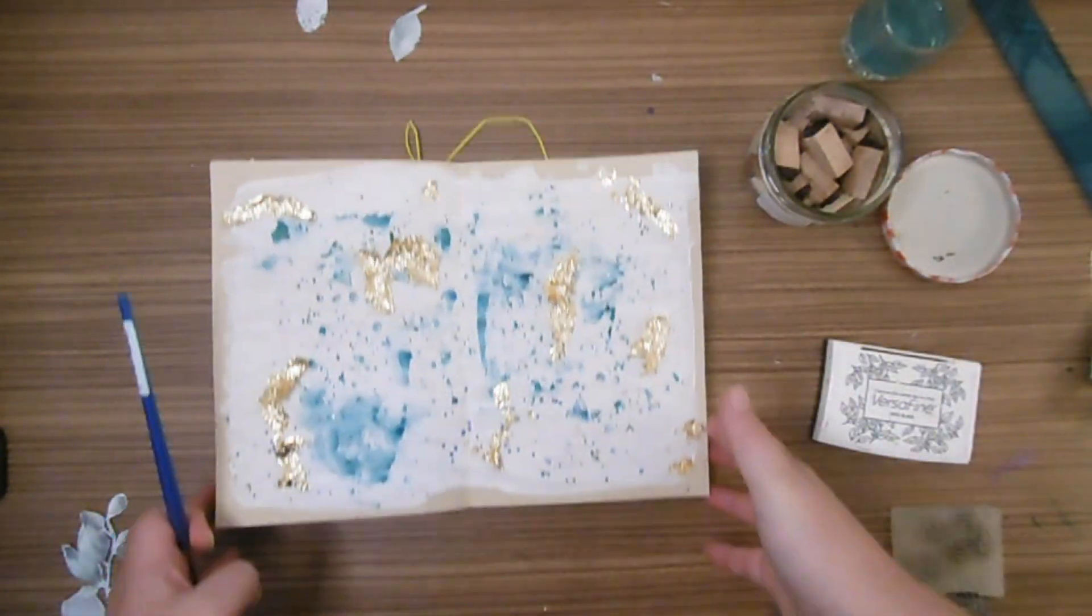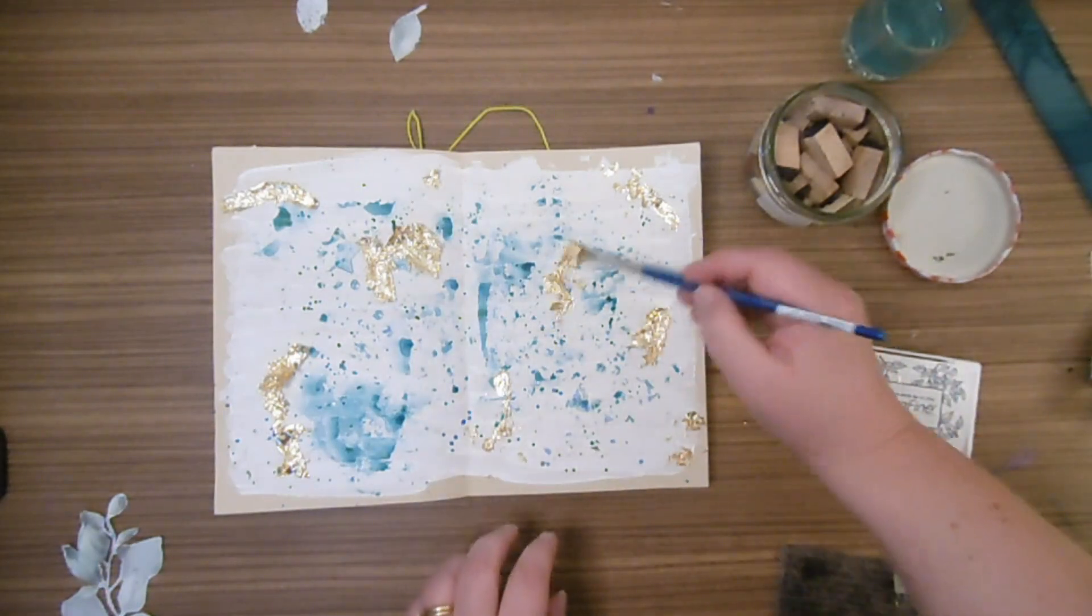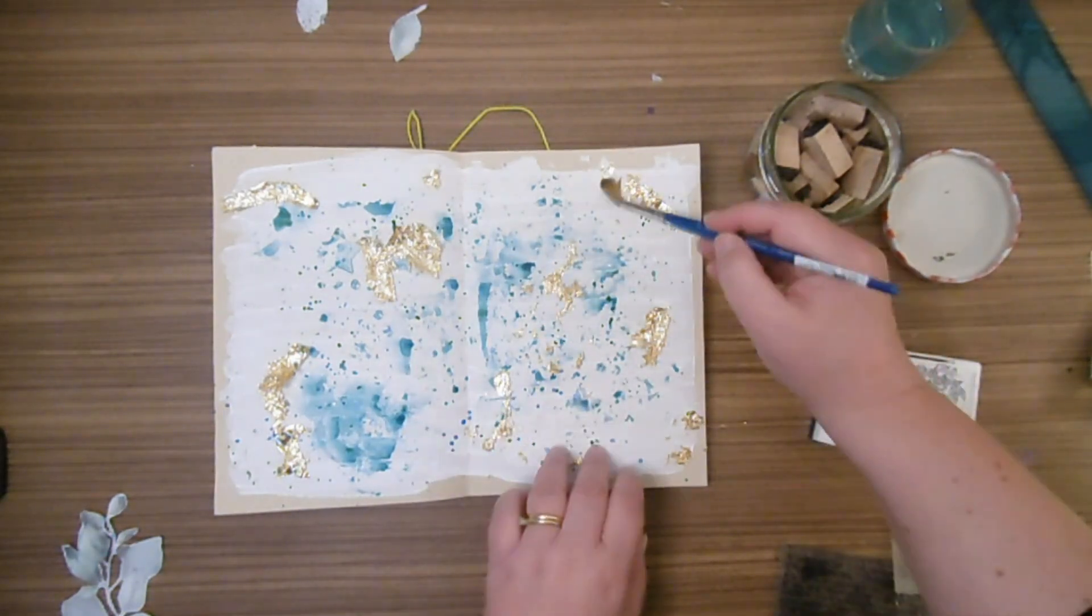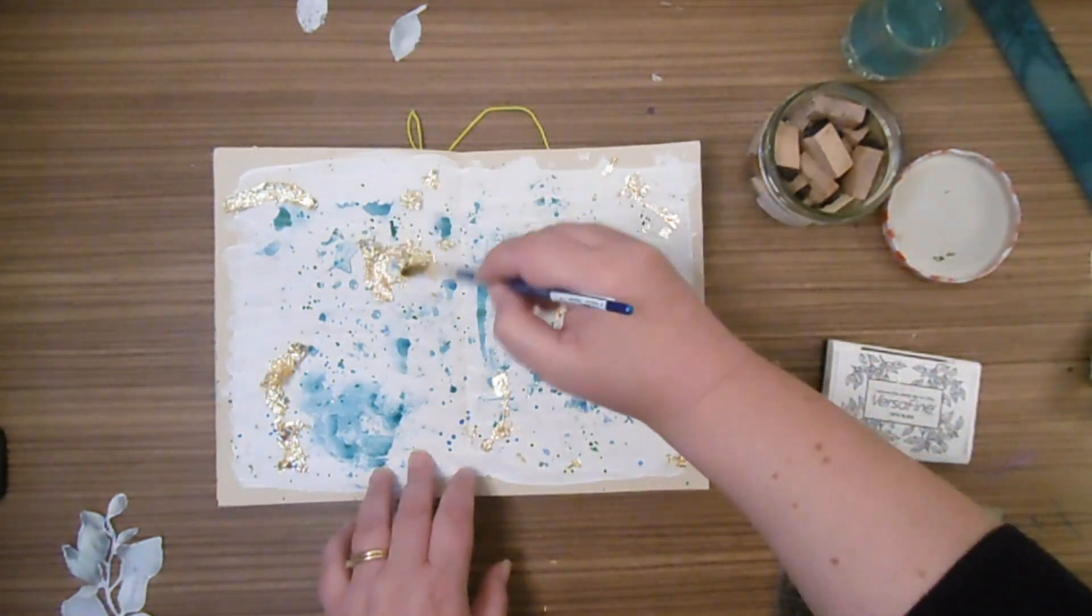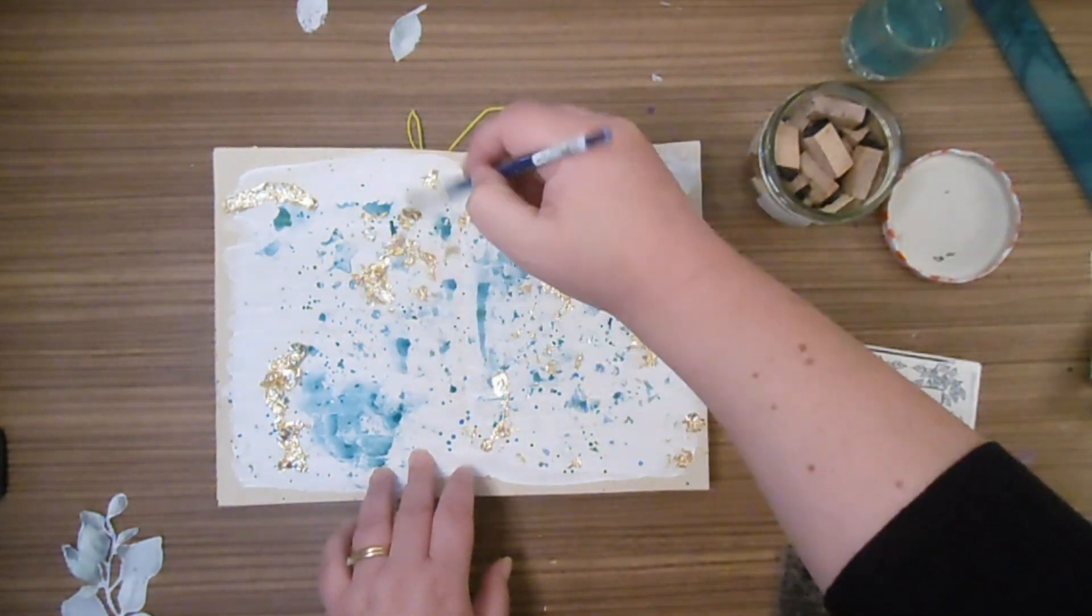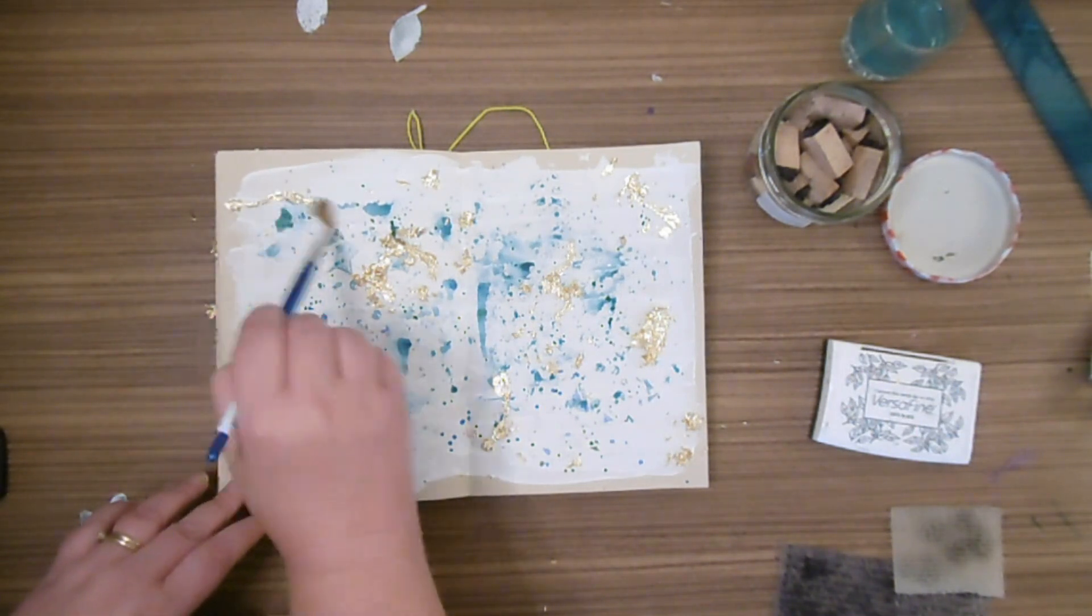Ensuite, on attend bien que la colle sèche. Et avec un petit pinceau, on vient retirer le surplus des feuilles d'or pour laisser apparaître juste les endroits où la feuille d'or tient avec la colle.